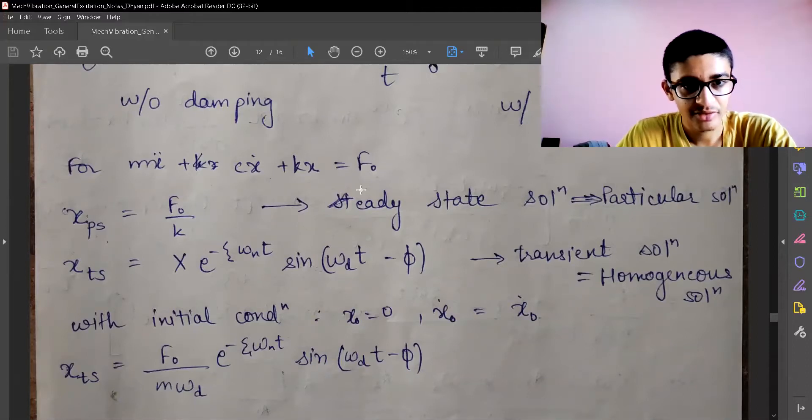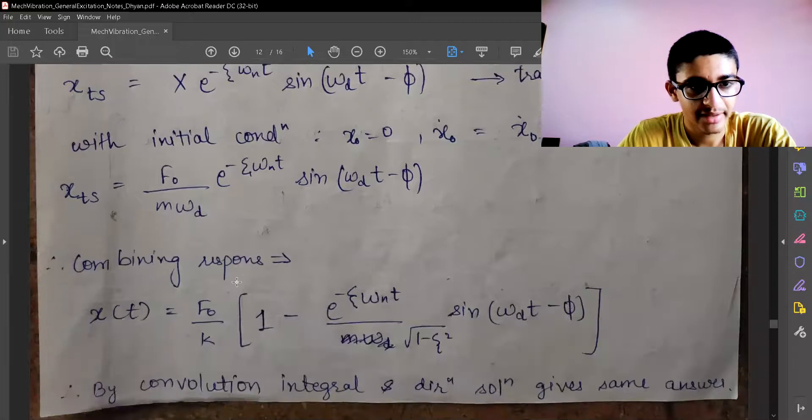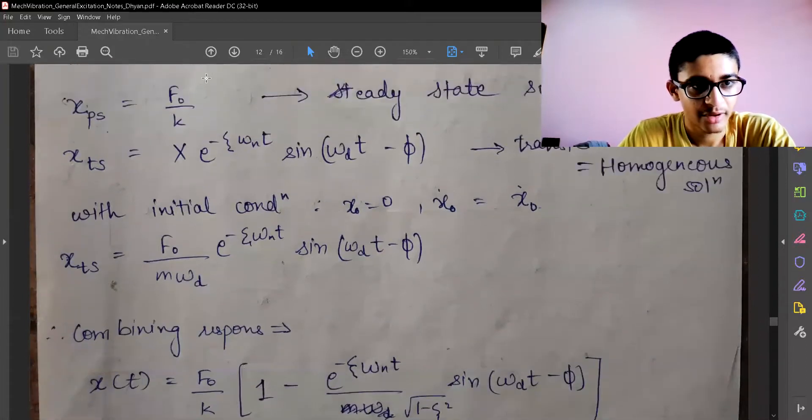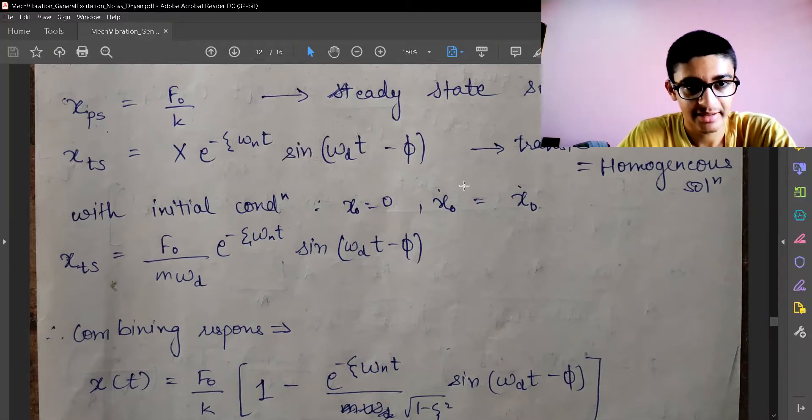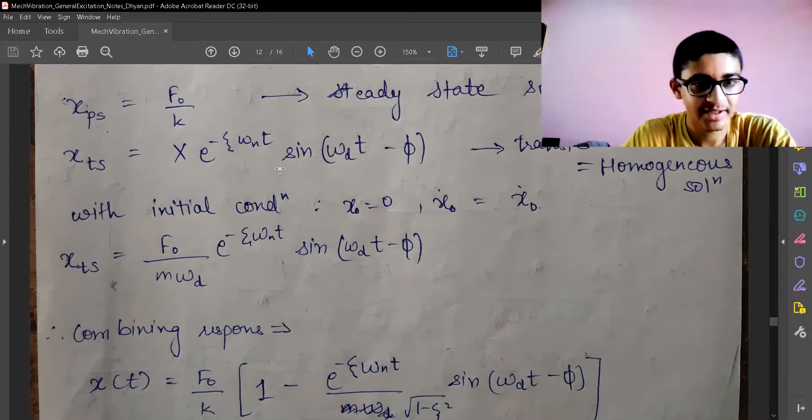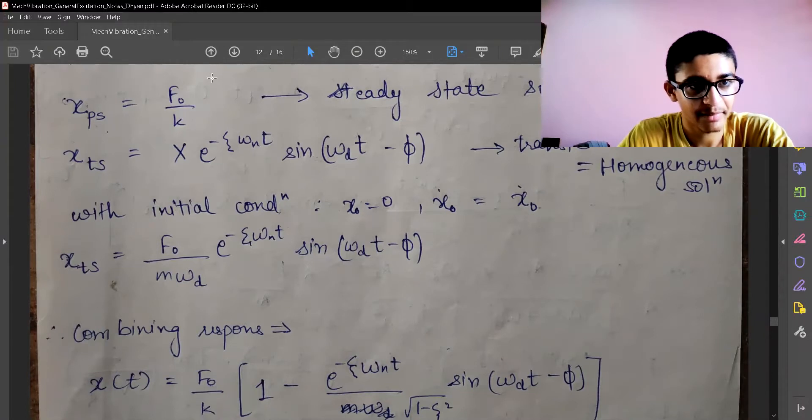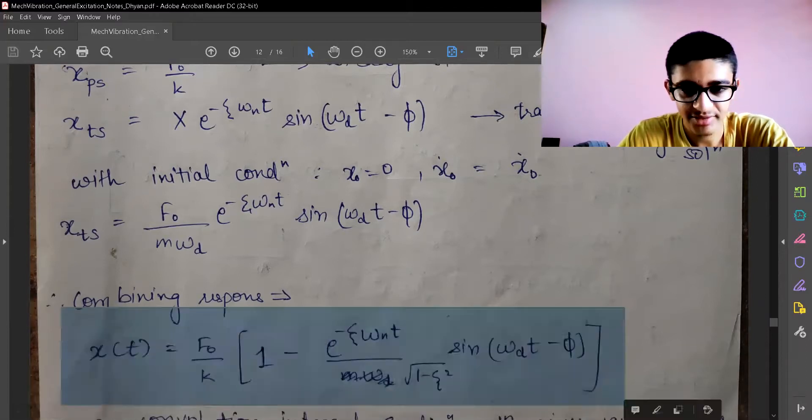This is the combined response. There are two approaches we have used. One approach is where we have split the excitation - we combined the terms for the general excitation with respect to unit impulse, and the transient response was without any impulse, just the exponential decay part. Then we applied particular solution where we were applying force or impulse, and we combined these two solutions to get the combined response.